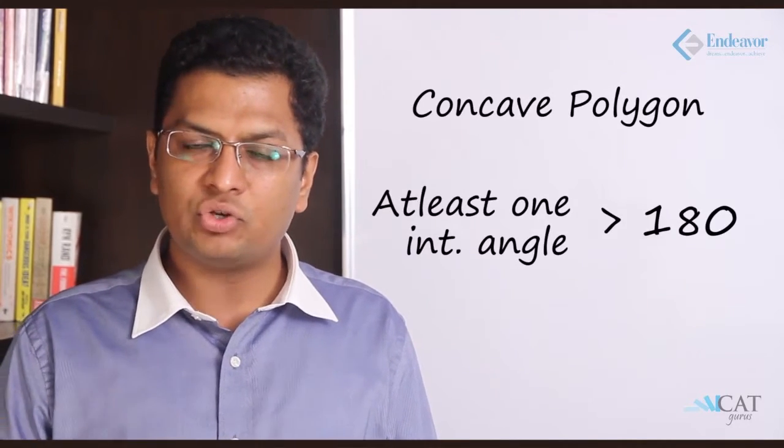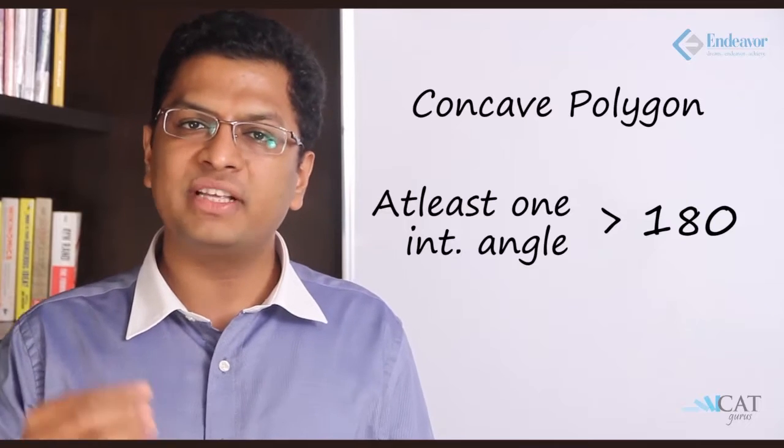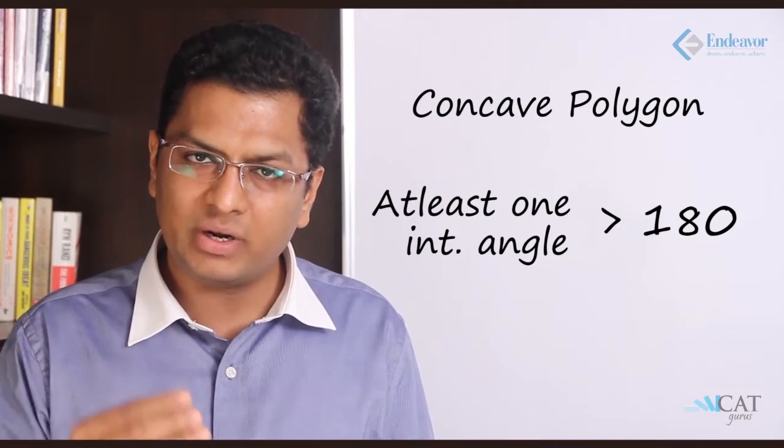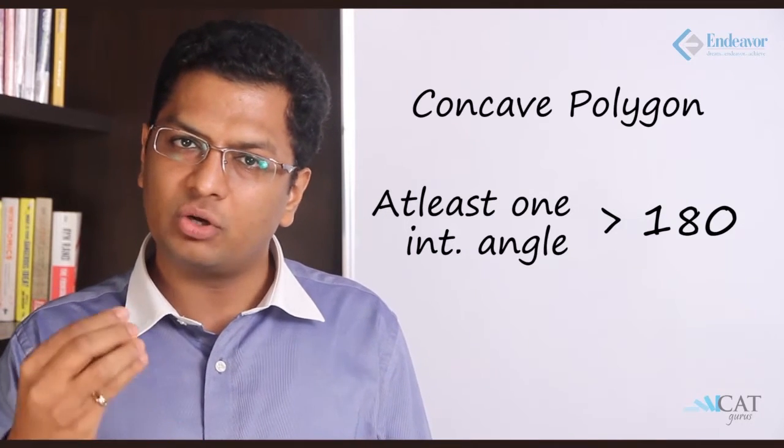For a quadrilateral, the total degrees across the four angles is n minus two into 180. So with n equal to four, it is four minus two into 180, which gives 360 degrees. Hence it is possible to have an angle greater than 180 degrees. A greater than 180 degree angle makes it a concave polygon, and all angles less than 180 makes it a convex polygon.